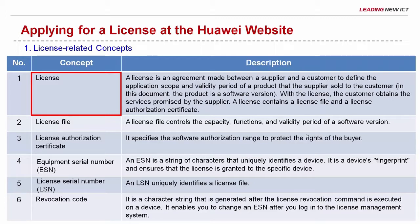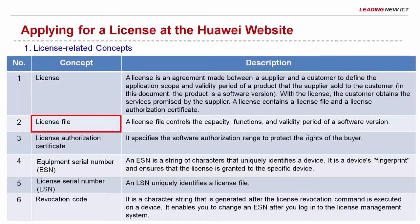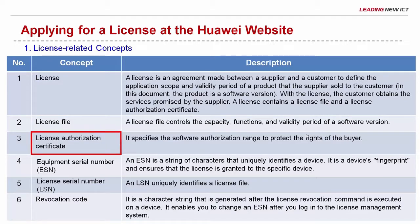A license contains a license authorization certificate and a license file. A license file controls the capacity, functions, and validity period of a software version. It is generated by a dedicated encryption tool based on the contract signed between the supplier and the customer, and delivered in electronic form. A license authorization certificate functions as the credentials of license authorization. It specifies the software authorization range to protect the rights of the customer.